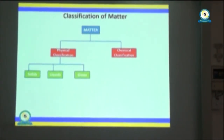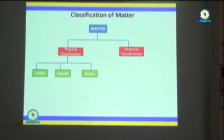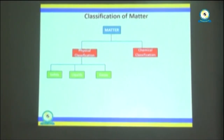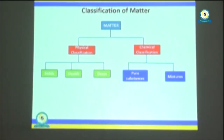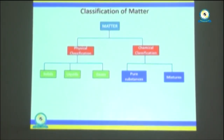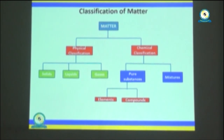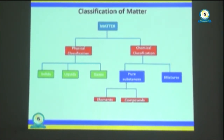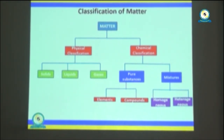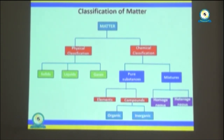Under the physical classification of matter, matter can be classified as solid, liquid, or gas, as pure substance or mixture. Under the pure substance category, we have two categories: elements and compounds. Under the mixture, it can be homogeneous mixture or heterogeneous mixture. And again, compounds are classified as organic compounds or inorganic compounds.